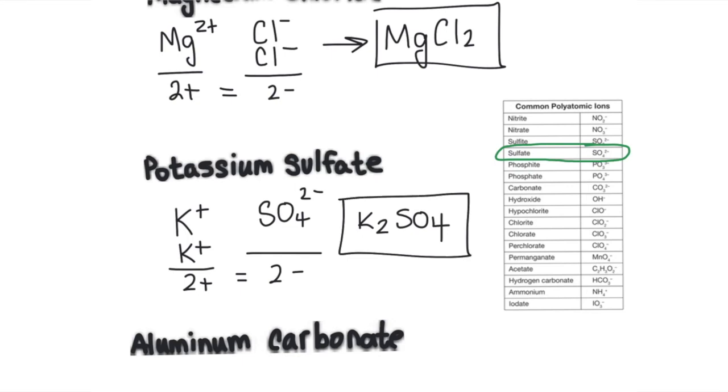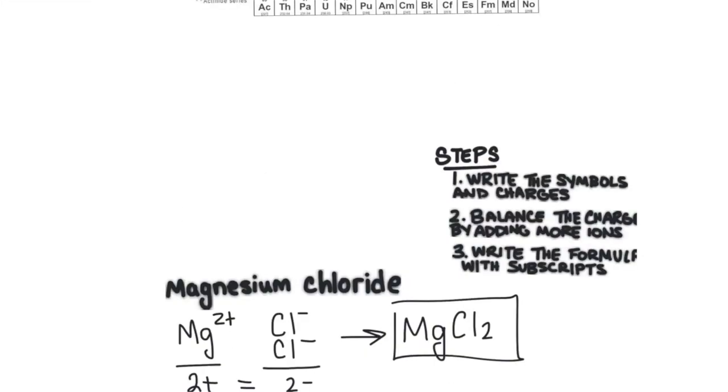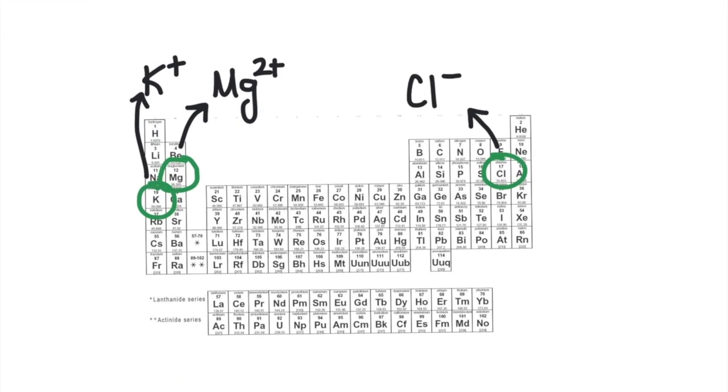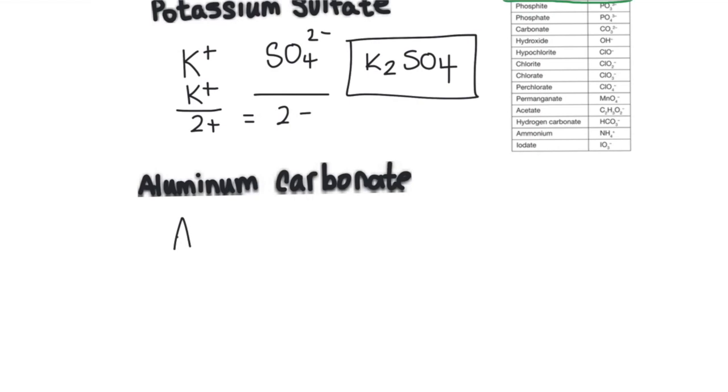We'll try one more example. In this example, I'll show you a shortcut. First thing to do is find aluminum on the periodic table. Aluminum is a group three metal, we could find that right here. That's going to have a 3+ charge, so we'll go ahead and write that into our example. And then carbonate is not on the periodic table because it is one of our polyatomic ions. That's way up here at the top. And that's CO3 with a 2- charge.